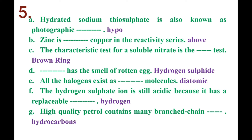Number C. The characteristic test for soluble nitrates is the brown ring test.